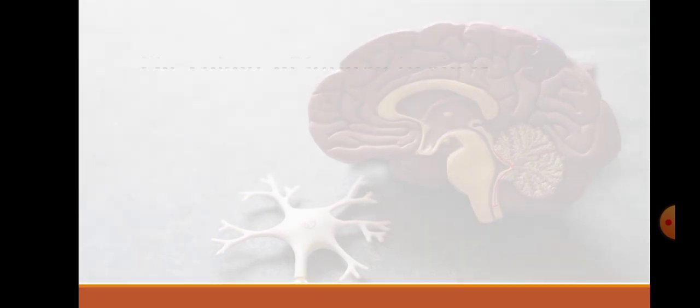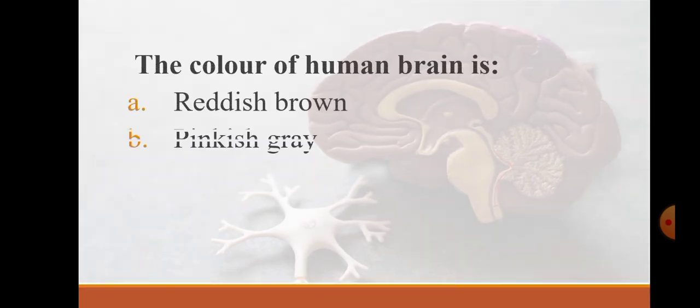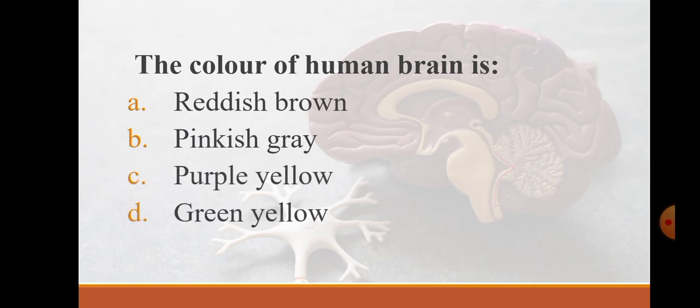The color of human brain is reddish brown, pinkish gray, purple yellow, or green yellow. The correct answer is pinkish gray.